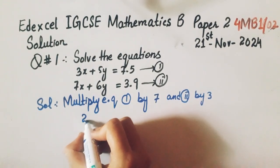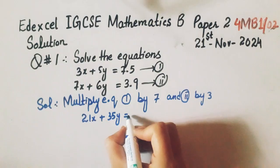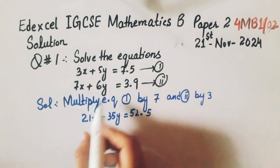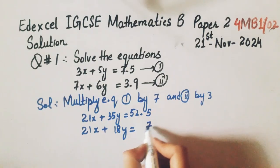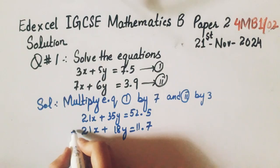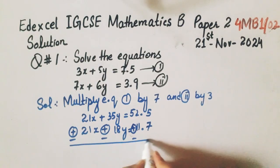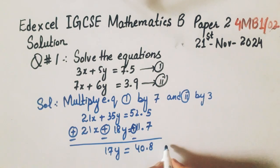So this will become 21x plus 35y equals 52.5. Then multiply this equation by 3: 21x plus 18y equals 35.1. Now we will subtract this. 21x cancels. This will become 35y minus 18y equals 17y. 52.5 minus 35.1 equals 17.4. Then divide this by 17. We will get 2.4.